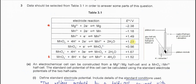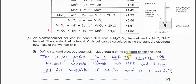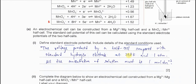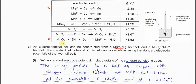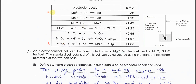Question 3. This question is about the reactions between the permanganate electrode and magnesium electrode. An electrochemical cell can be constructed from a magnesium ion and magnesium half-cell, and manganese with Mn²⁺ half-cell. We're going to use the first and last values from the table for the calculations later.